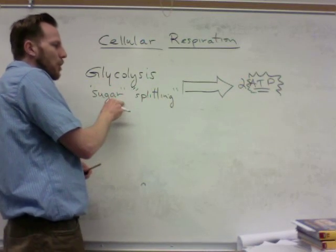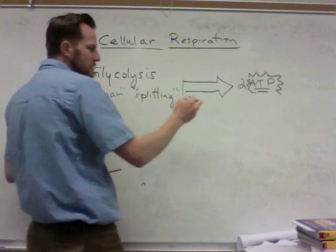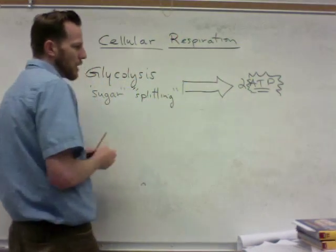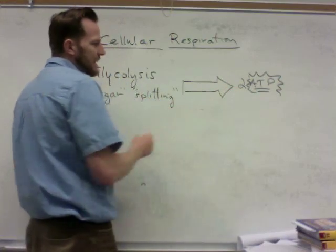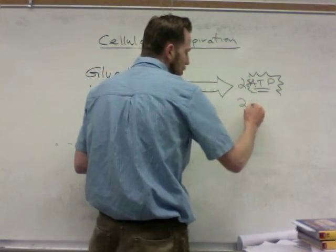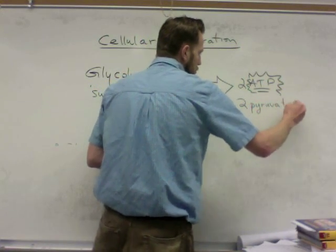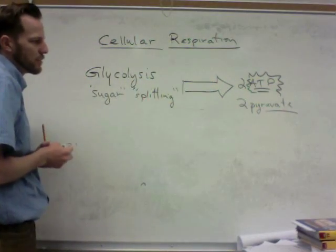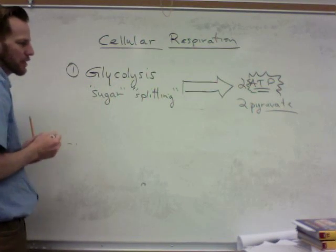Glycolysis also begins to release some carbon dioxide and some water. It makes two ATP and two molecules called pyruvate. Those are the products of glycolysis — that's the first step of cellular respiration.